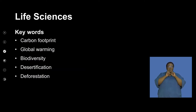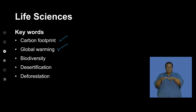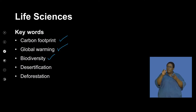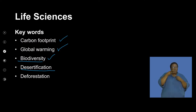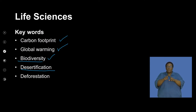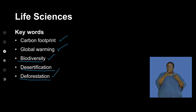We're going to look at carbon footprint and what that means to us as individuals. We also need to look at global warming, biodiversity — as South Africa is a highly diverse country — desertification, which is the process of land becoming arid and dry and unable to be cultivated for crops or animal feeding, and deforestation, both in the South African and global context.